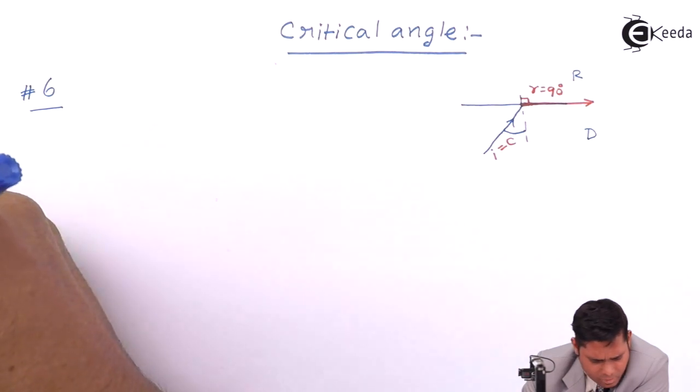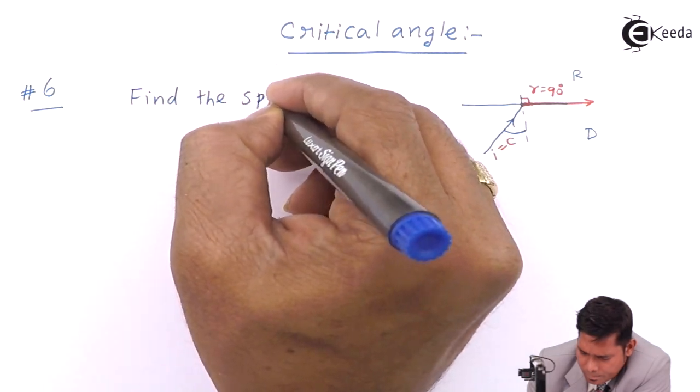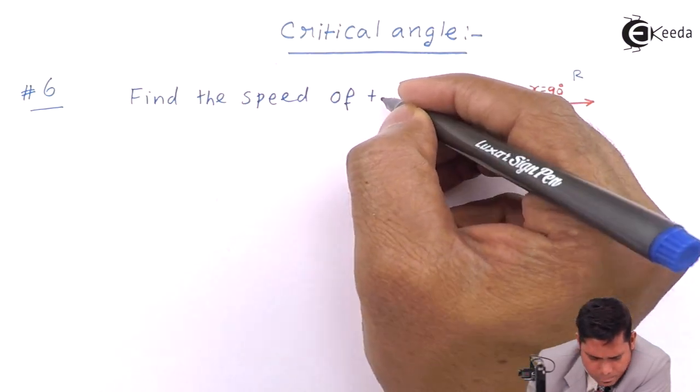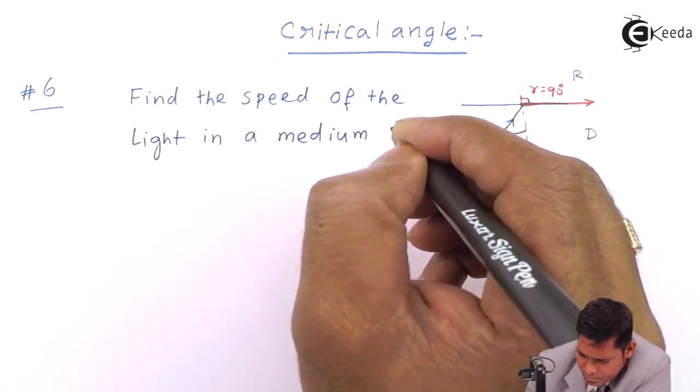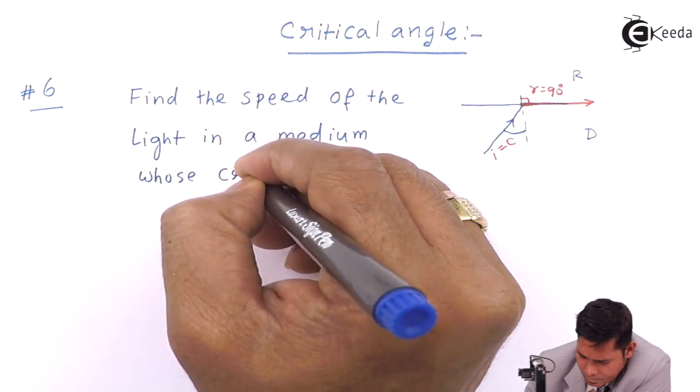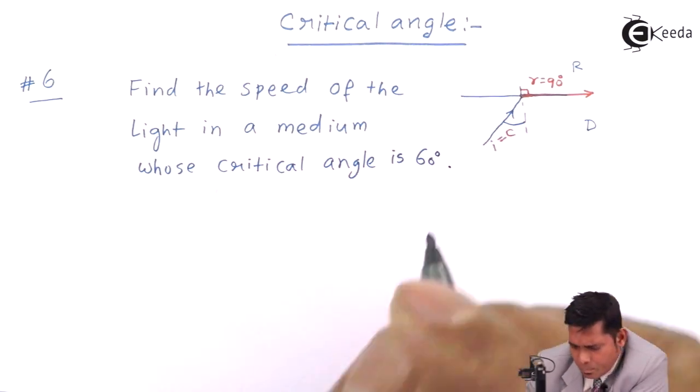Now, it says that find the speed of the light in a medium whose critical angle is 60 degrees. This is the question.